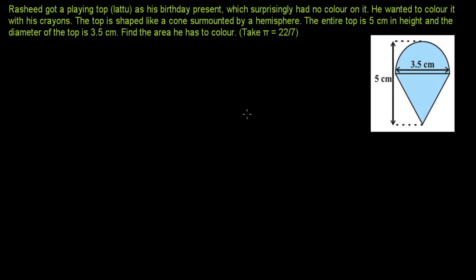Welcome friends to the presentation of surface areas of combination of solids. In this video, we'll be talking about many different types of geometrical solids like sphere, hemisphere, cone, cuboid, cube, cylinder, and many more. We'll be combining them and trying to find out the surface areas of the combined figures, and solving related mensuration problems.